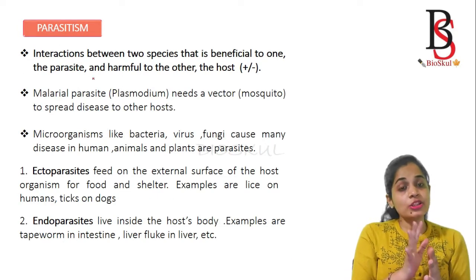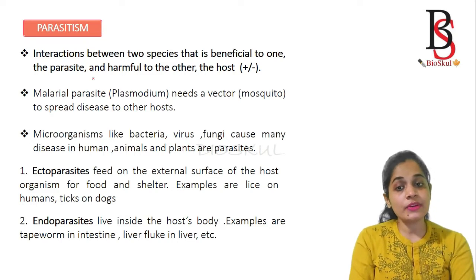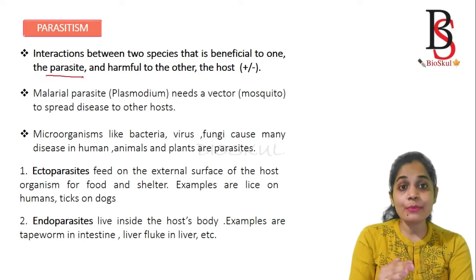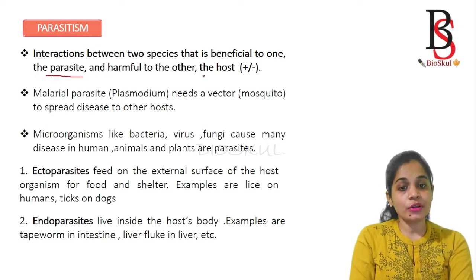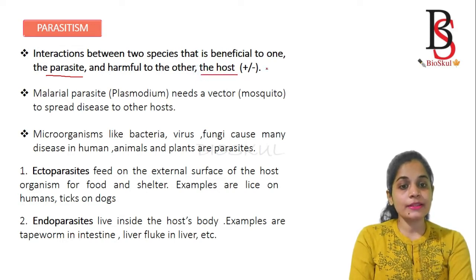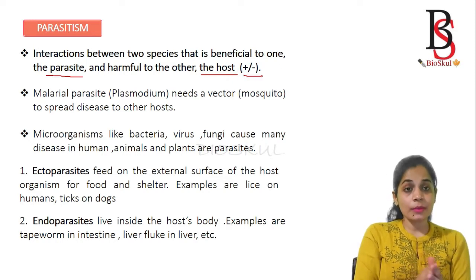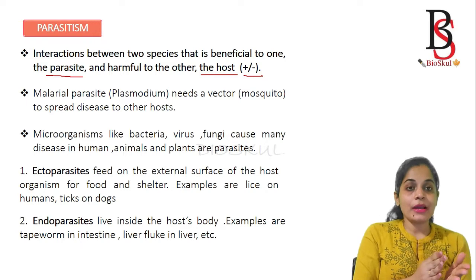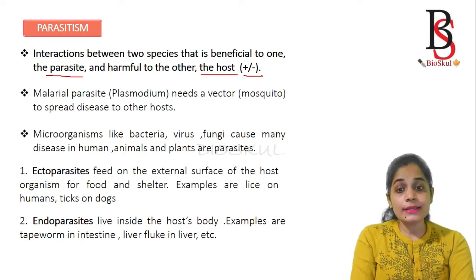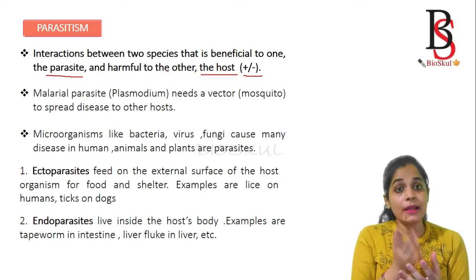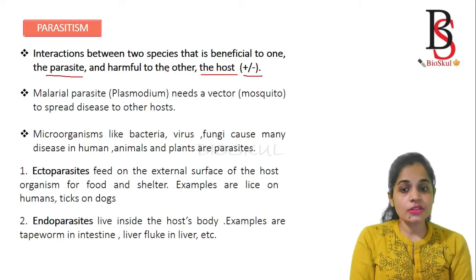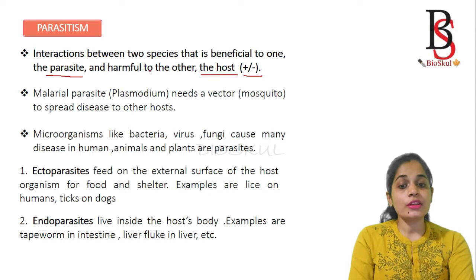The next negative interaction is parasitism. Parasitism is an interaction between two species that is beneficial to one — known as the parasite — and harmful to the other — known as the host. Parasitism is represented by plus-minus, where plus means one is getting benefited and minus means the other is getting harmed. An example is the malarial parasite Plasmodium, which uses the vector mosquito to spread disease to a host.